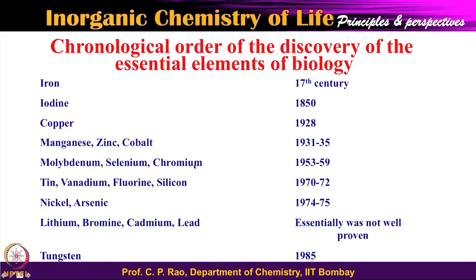Some of these may look puzzling because you may think they are toxic — I will explain that as well. Some more ions were identified at a later stage, in the early 1970s, like tin, vanadium, fluorine, silicon, and a bit later nickel and arsenic — you may say arsenic is poisonous. Any element can be poisonous at a large concentration, but they could be essential elements at lower concentrations, which I will convince you of in a few slides.